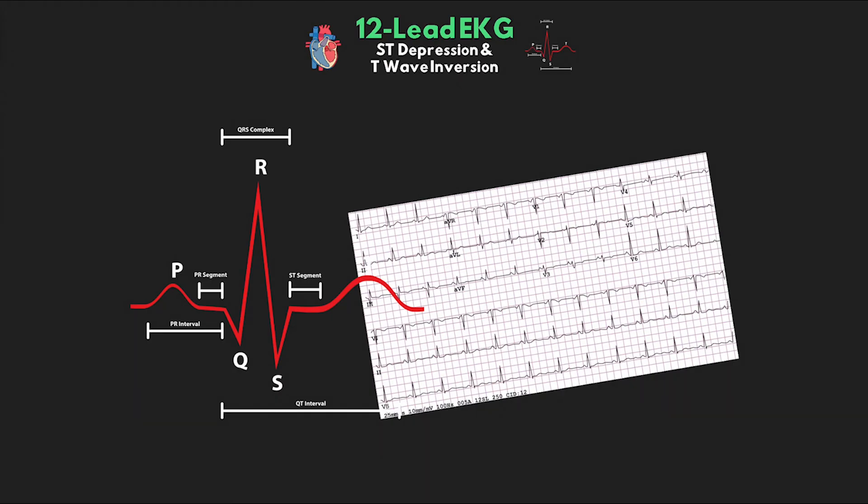Nearing the end of our 12-lead EKG series, we're going to be taking a good look at ischemia and infarction over the next couple lessons. In this lesson specifically, we're talking about seeing ST depression and T-wave inversion on our EKG, especially in relation to ischemia and the importance of such, along with its recognition.